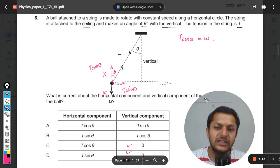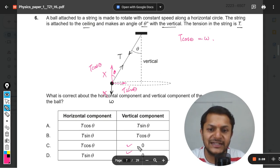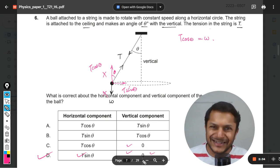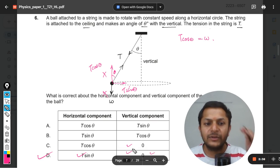We are only concerned with the total force, the net force. This is going to be T sin theta. So D will be the correct option because vertically the net force will be zero and in the horizontal manner it will be T sin theta.